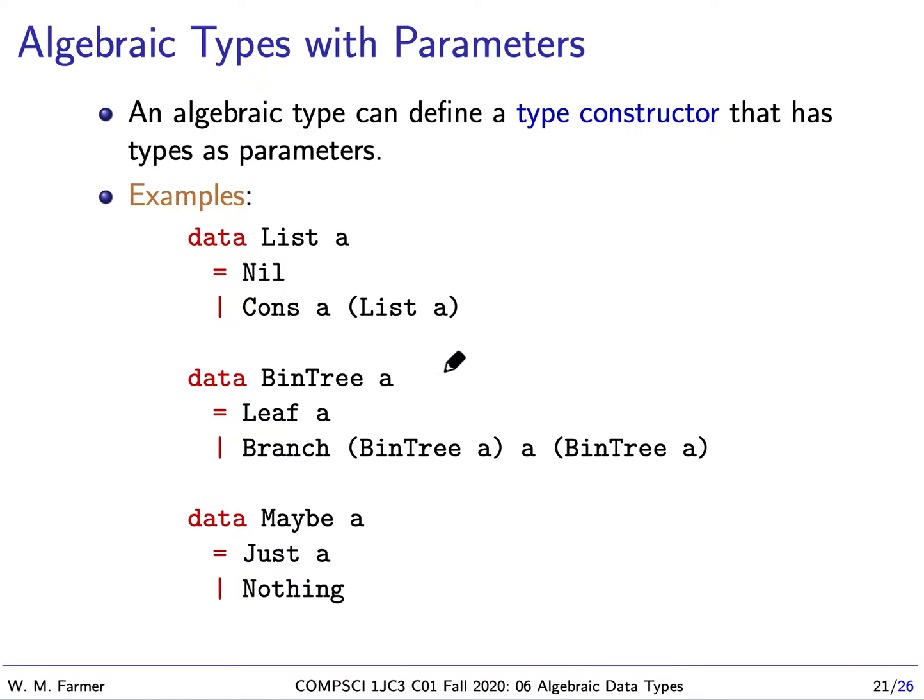Similarly, we can define a type of bin trees that have values attached to the nodes, and we can let the values be whatever they want. That will be a parameter. So remember, before we had bin tree float. This basically is a family of algebraic types, and bin tree float is one instance.